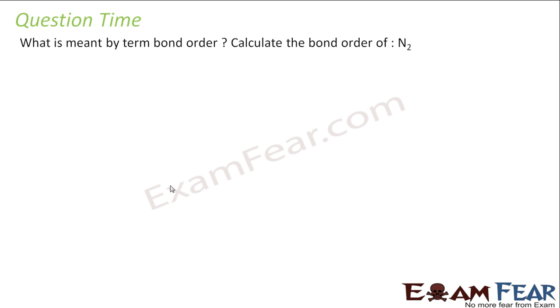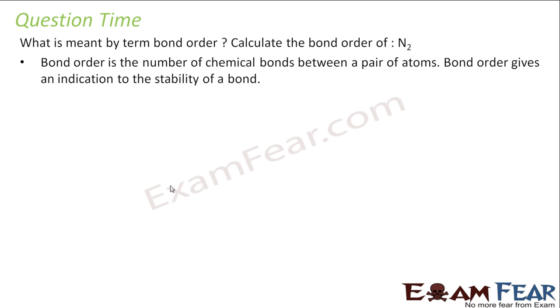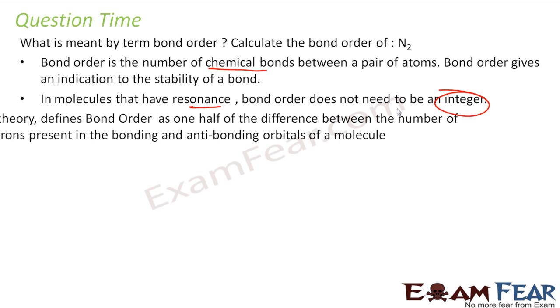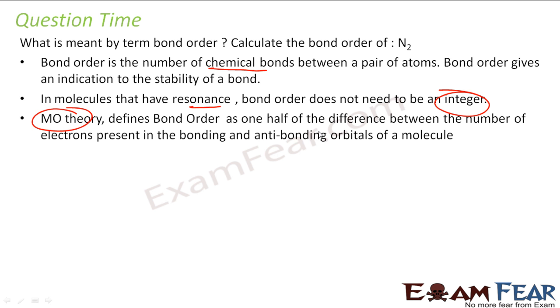What does it mean by bond order? Calculate the bond order of N2. As I told, bond order in terms of Lewis theory is nothing but the number of chemical bonds. In terms of Lewis theory. And in molecules that have resonance, the bond order did not need to be an integer. It can be 1.5 or something. So in molecular orbital theory, it defines the bond order as nothing but half the difference between the number of electrons resulting in bonding and antibonding orbitals.